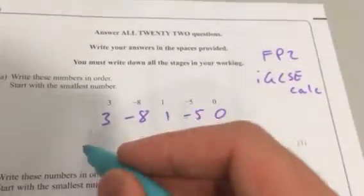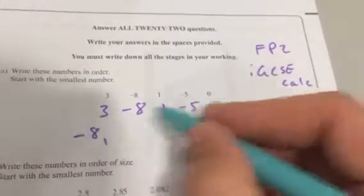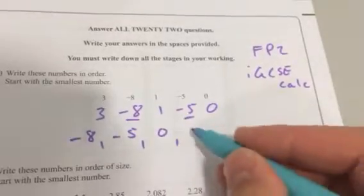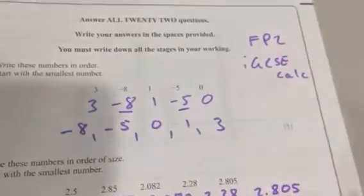That's the bigger negative, so it's further away from 0. Minus 8, then minus 5, so those two are done. Then 0, then 1, then 3.